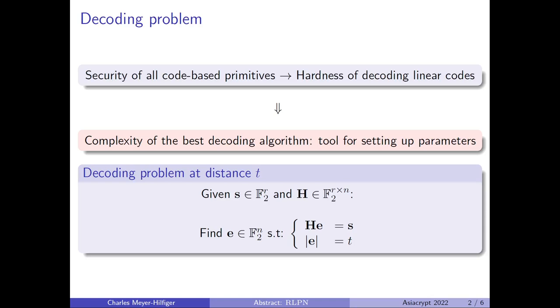Given a vector s of size r and a matrix H of r rows and n columns, find the vector e such that He equals s and e is of Hamming weight t, where the Hamming weight of e is just the number of non-zero coordinates of e.